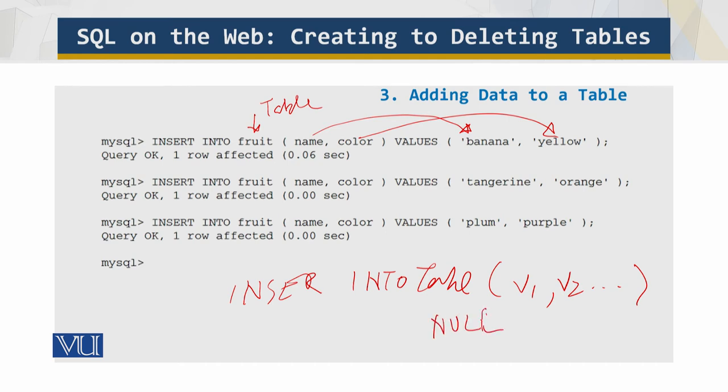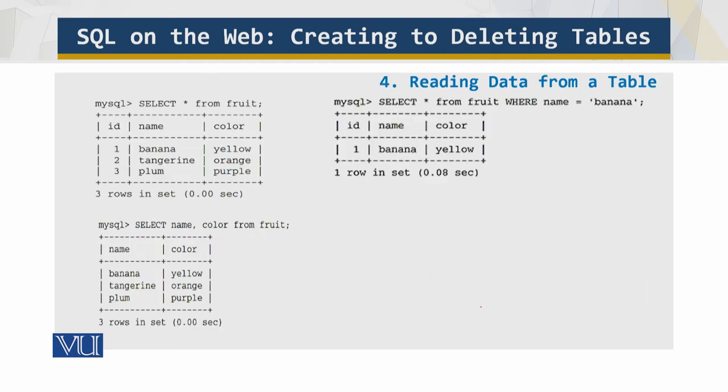Now we move on to reading the data from a table. Once we have created the database, created the table, entered the data, we need to read from the table. So now we have what we had entered. I said SELECT asterisk from table. It means show all columns. Then I say SELECT name and color, and you see that this and this are the same.